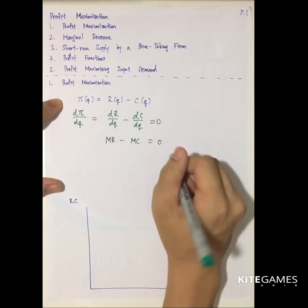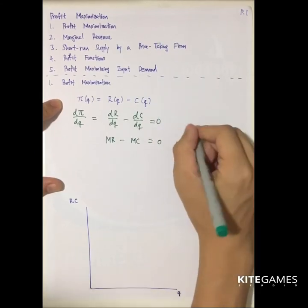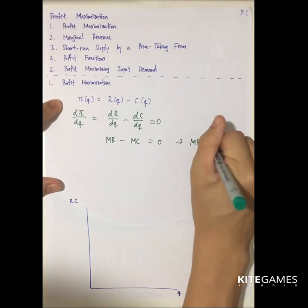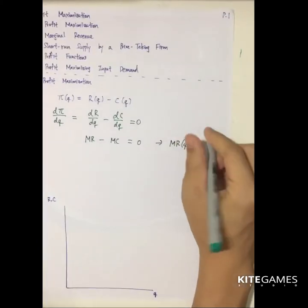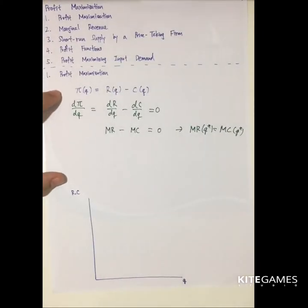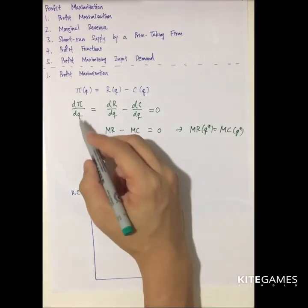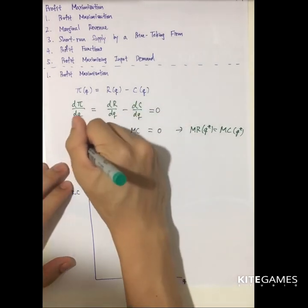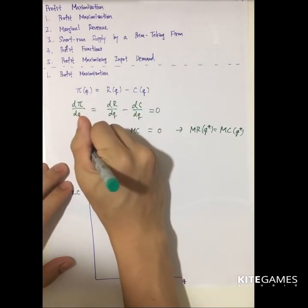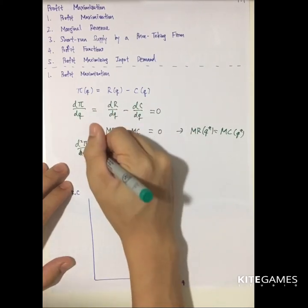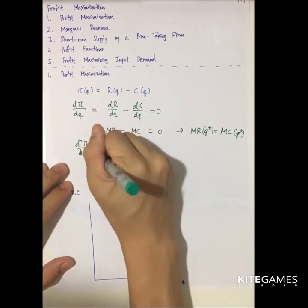Here you can see that if the profit is maximized, the marginal revenue is equal to the marginal cost at the profit maximizing point. This is the necessary condition.